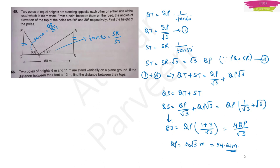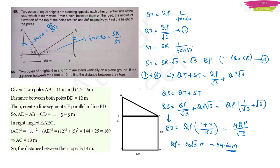Question 66: Two poles of heights 6 m and 11 m stand on flat ground with 12 m between their feet. Find the distance between their tops. Draw EC parallel to BD to form right triangle AEC, where AE = 11 − 6 = 5 m and EC = 12 m. By Pythagoras: AC² = 12² + 5² = 144 + 25 = 169, so AC = 13 m.